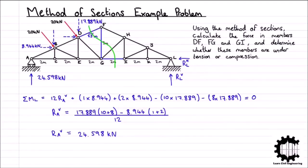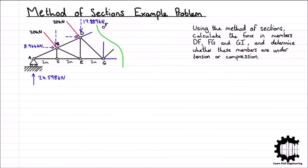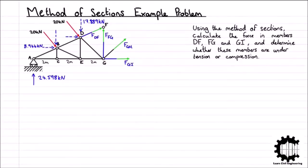Having calculated the support reaction force at node A, we apply our cut to the entire structure and discard the right-hand side. In order for our structure to remain in equilibrium, we replace the cut bars with internal forces — FDF, FFG, FGH, and FGI — as these stabilize the support reaction and external forces being applied. Note that we assume the sense of all internal forces to be tensile, as they originate from the centers of the cut bars and act towards the ends of the members.